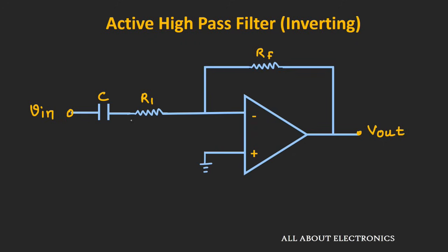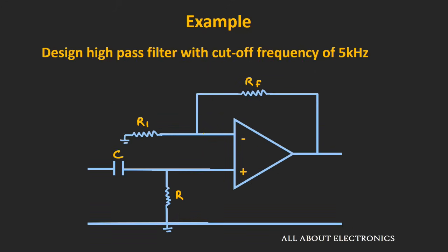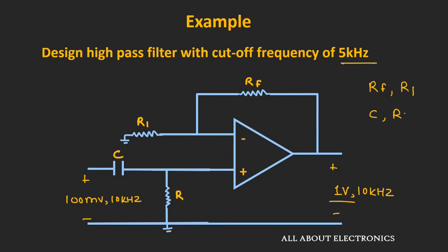Now suppose if we want to design higher-order filters, then we can cascade these first-order active filters to design higher-order filters, and we will see more about it in the upcoming videos. Before I end this video, here is one exercise which is very simple. You have to design a high-pass filter with a cut-off frequency of 5 kHz. And for this filter, whenever you apply an input signal of 100 mV at 10 kHz frequency, you should get an output of 1V at 10 kHz. So you have to select the values of Rf, R1, C, and R such that all these criteria are fulfilled.